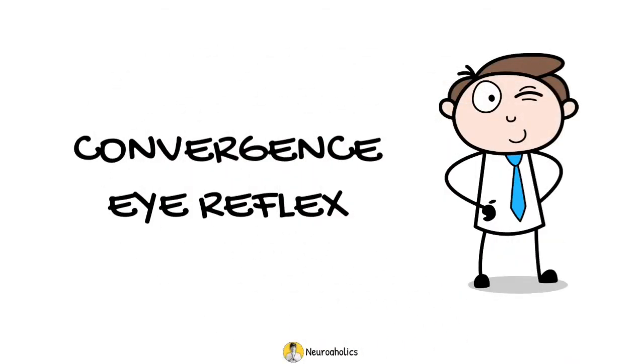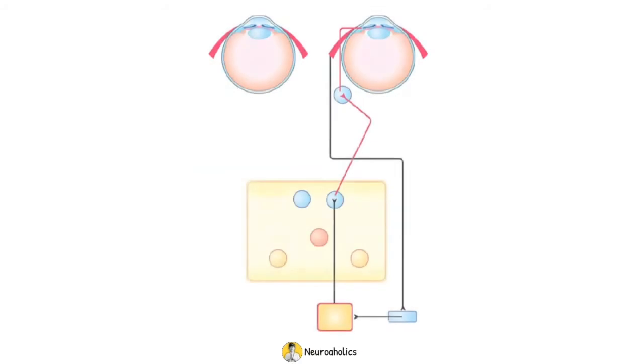Convergence Reflex. The convergence reflex comprises convergence of the visual axis of the eyes with associated constriction of the pupil. We will discuss its afferent and efferent pathway.